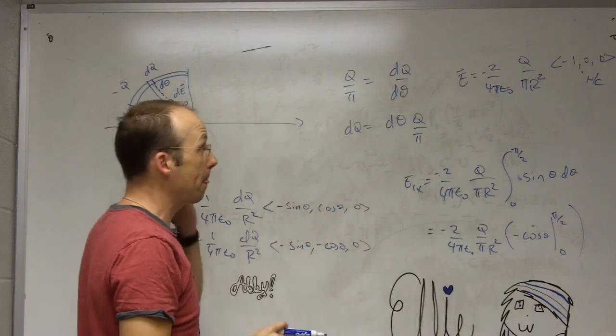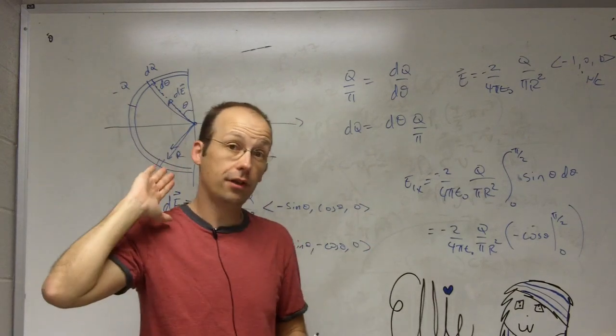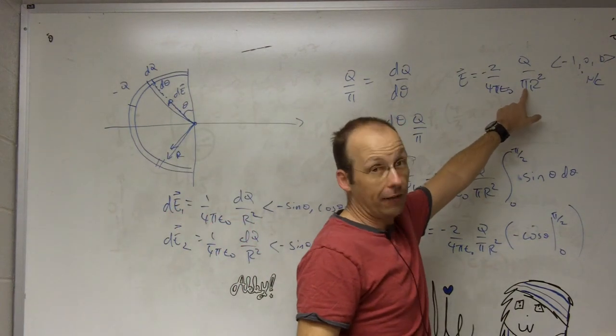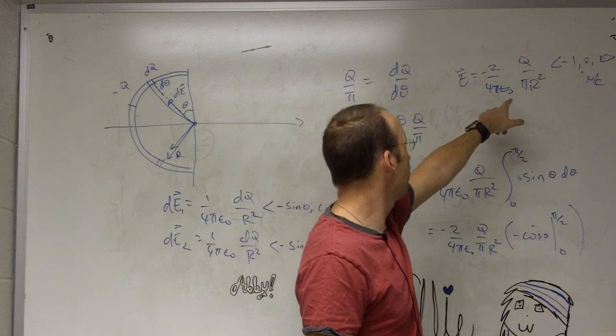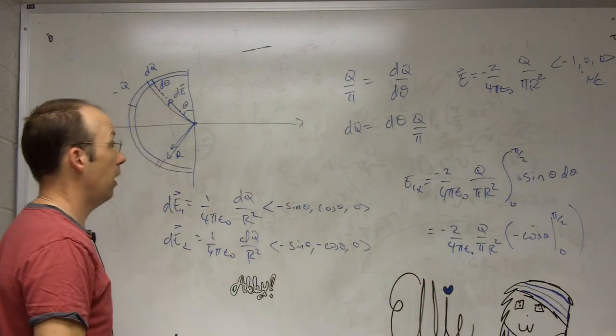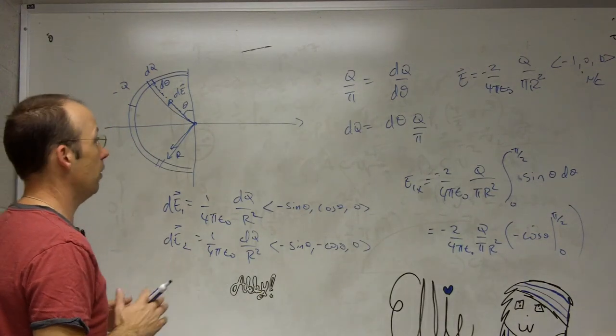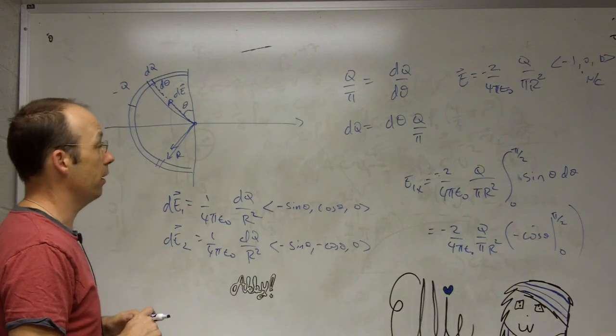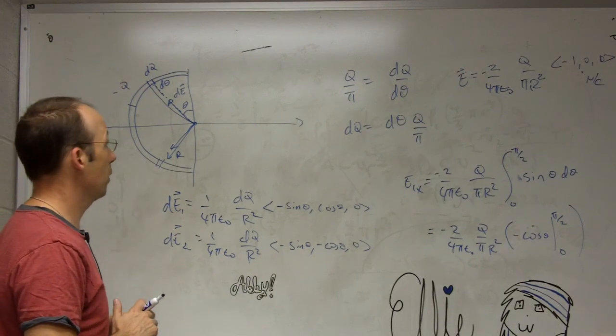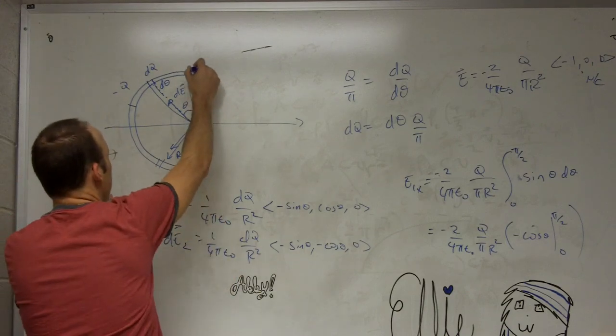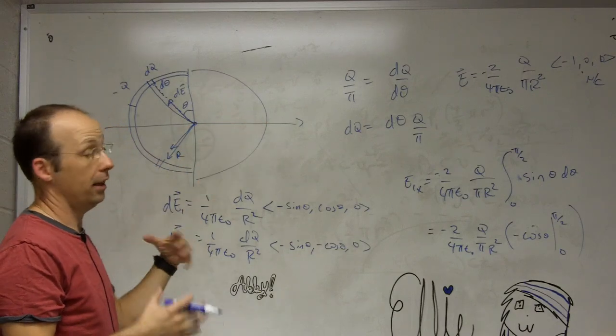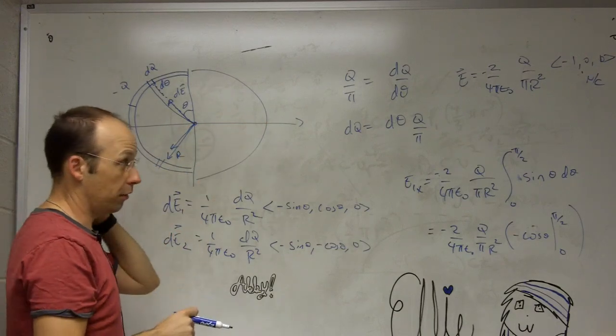And then we can check. We can check some things. Does it have the right units? Does it have units of one over four pi epsilon naught, Q over r squared? This pi doesn't have any units. So yeah, it does. Okay. It has the right direction. What about, well, we can't do as you get further away because we did it at that point. So there's nothing else we can really check. I mean, you could do this. You could say, what if I put in the other half? Then I would get the exact same answer, but the electric field would be going that way. And then it would cancel that up to zero, which agrees with the value for the ring.